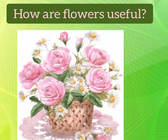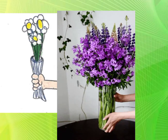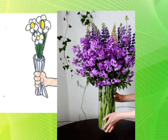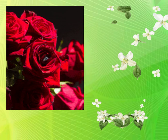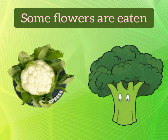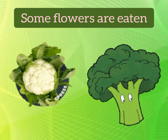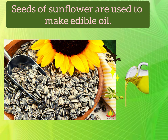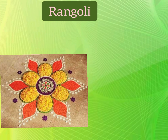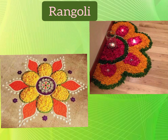Our next topic is how are flowers useful. Flowers are useful to us in many ways — they are used for expressing feelings of love and friendship and as gifts on special occasions like weddings, and flowers are also used in temples for decoration. Flowers like rose and jasmine are used to make perfumes because of their fragrance. Some flowers are eaten as vegetables, like cauliflower and broccoli, and the seeds of some flowers like sunflower are used to make edible oils. Flowers are also used to make floral patterns called rangoli on the floor.